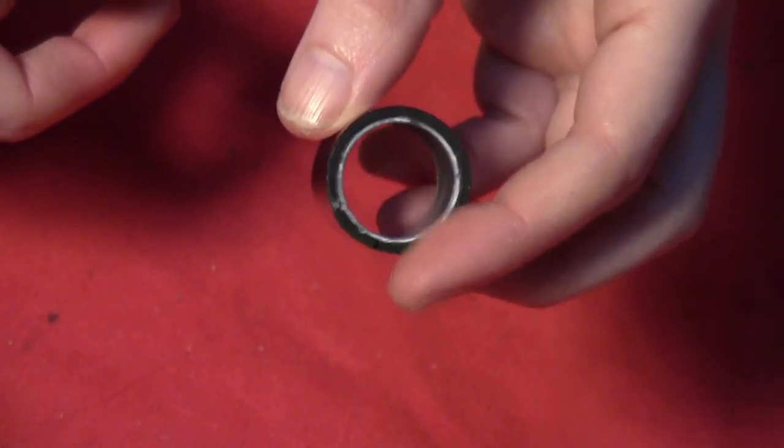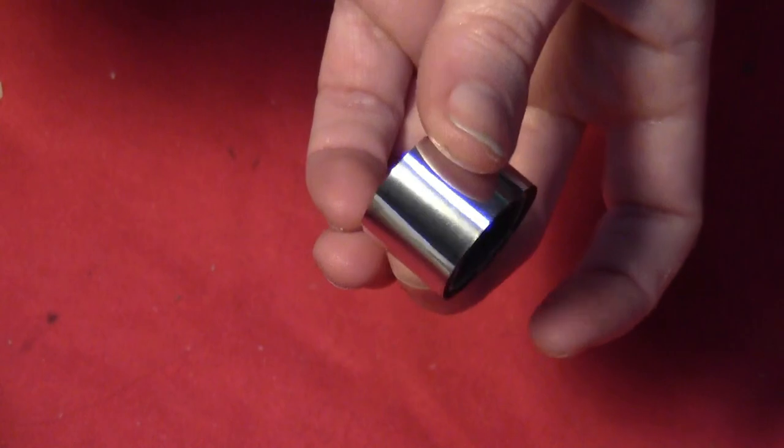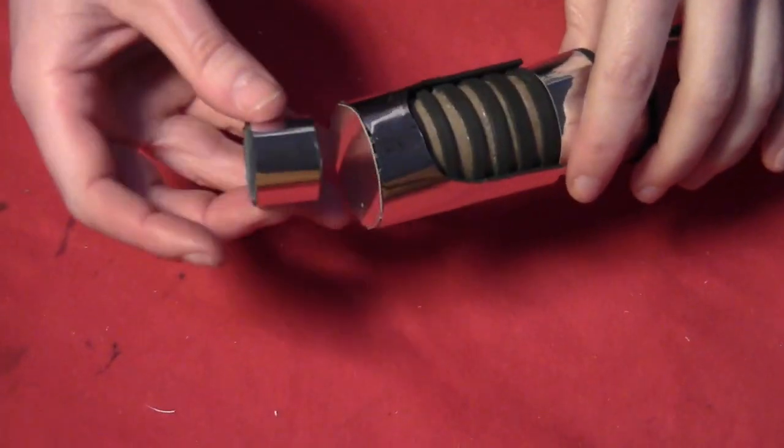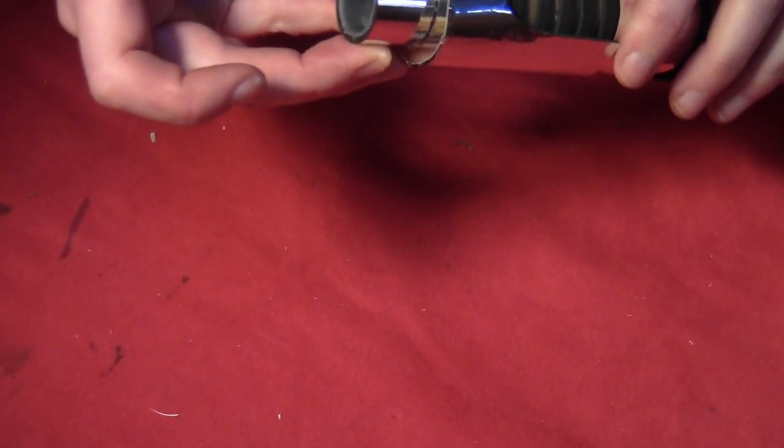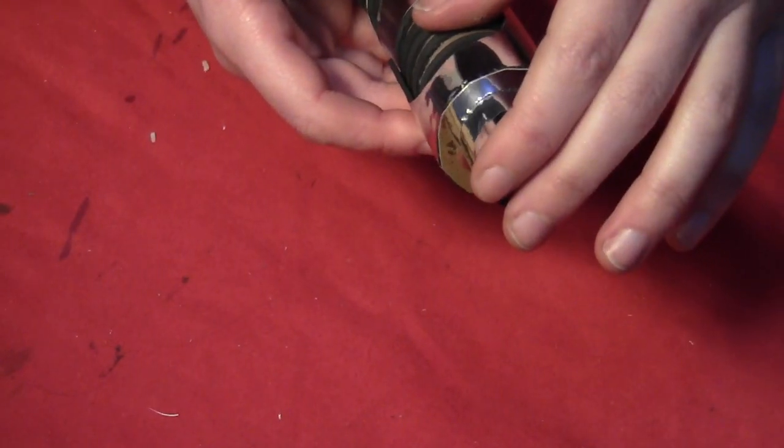Then I had a ribbon spool, which I covered in craft foam and some silver foil. You can use anything circular that you might have. And I just glued that onto the end, the plain end of the lightsaber.